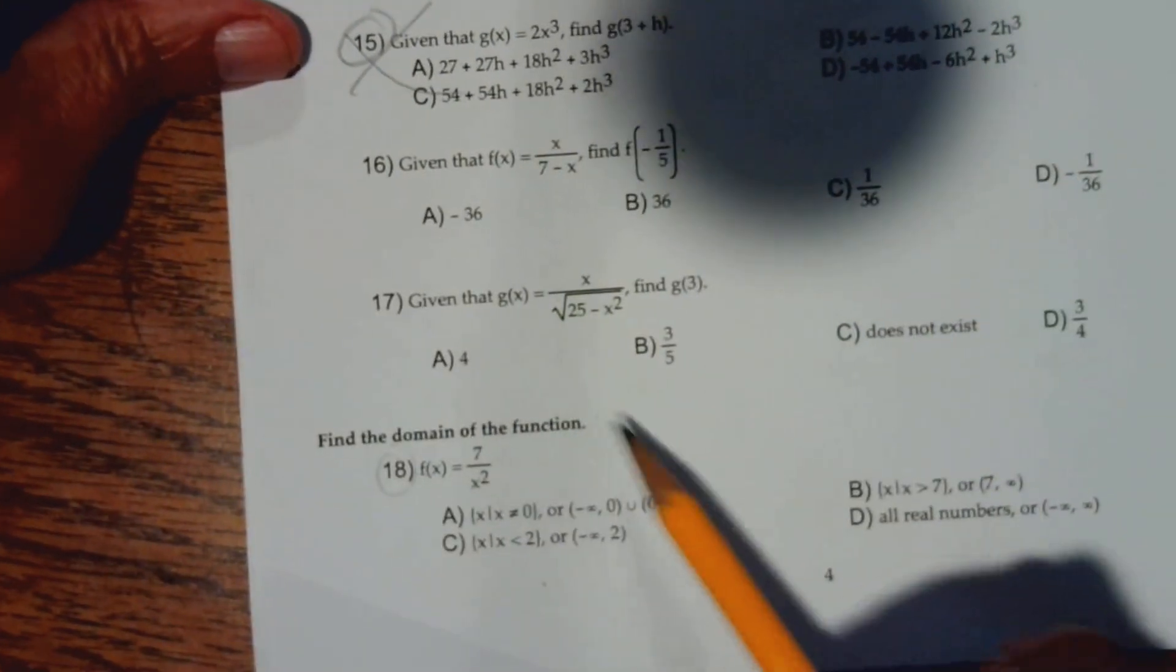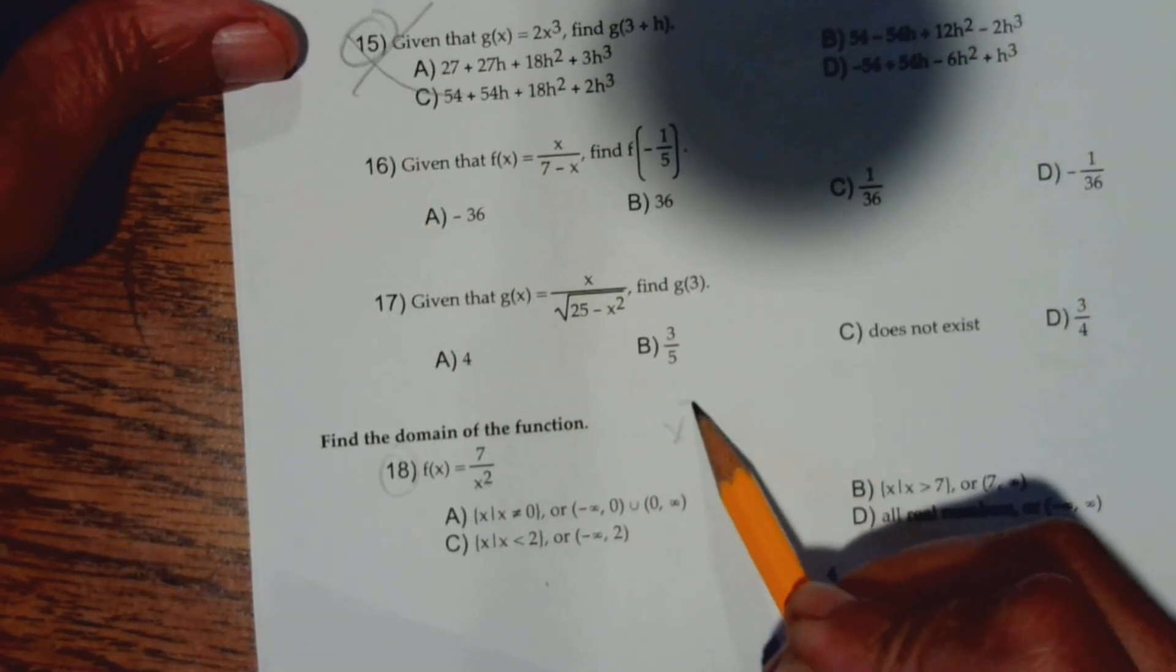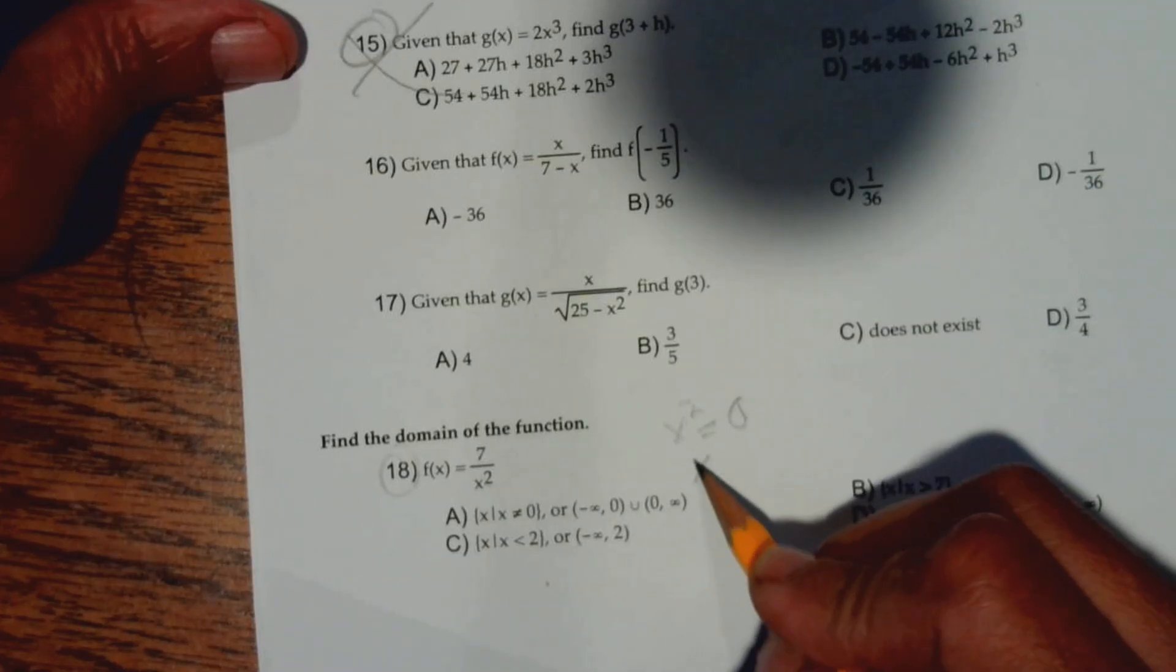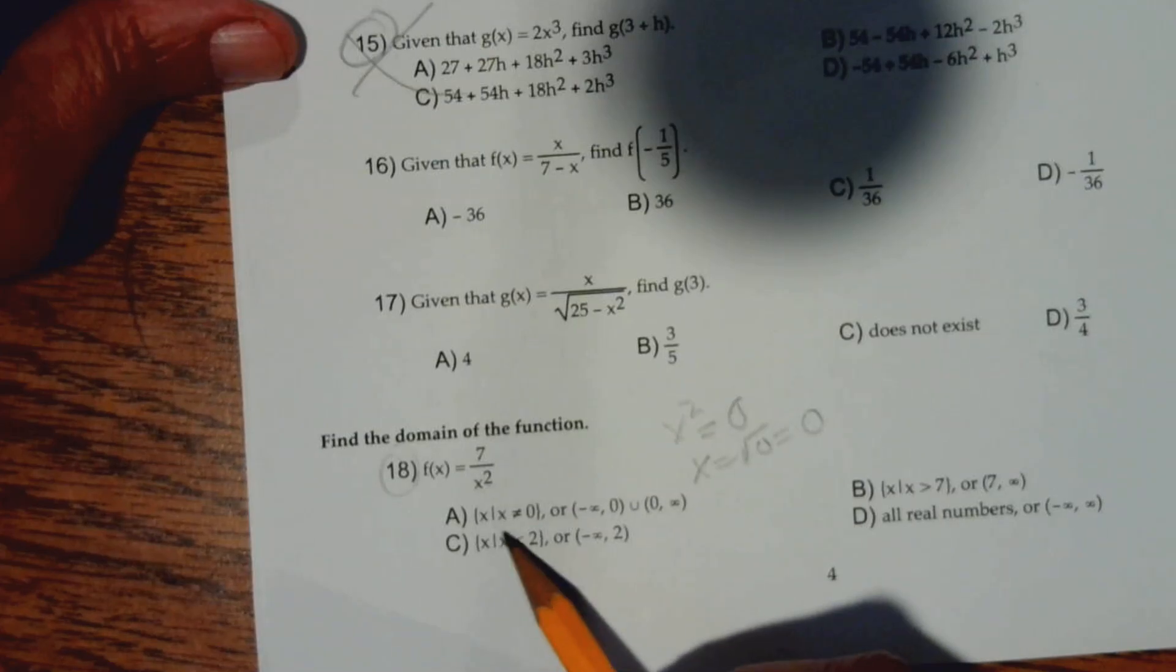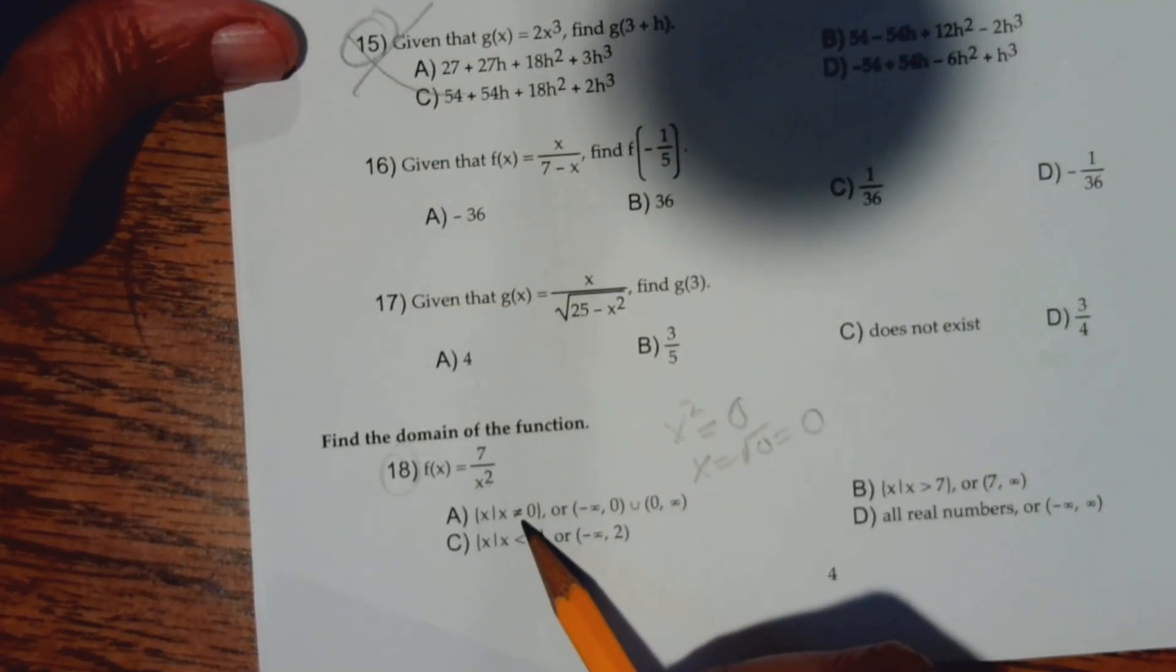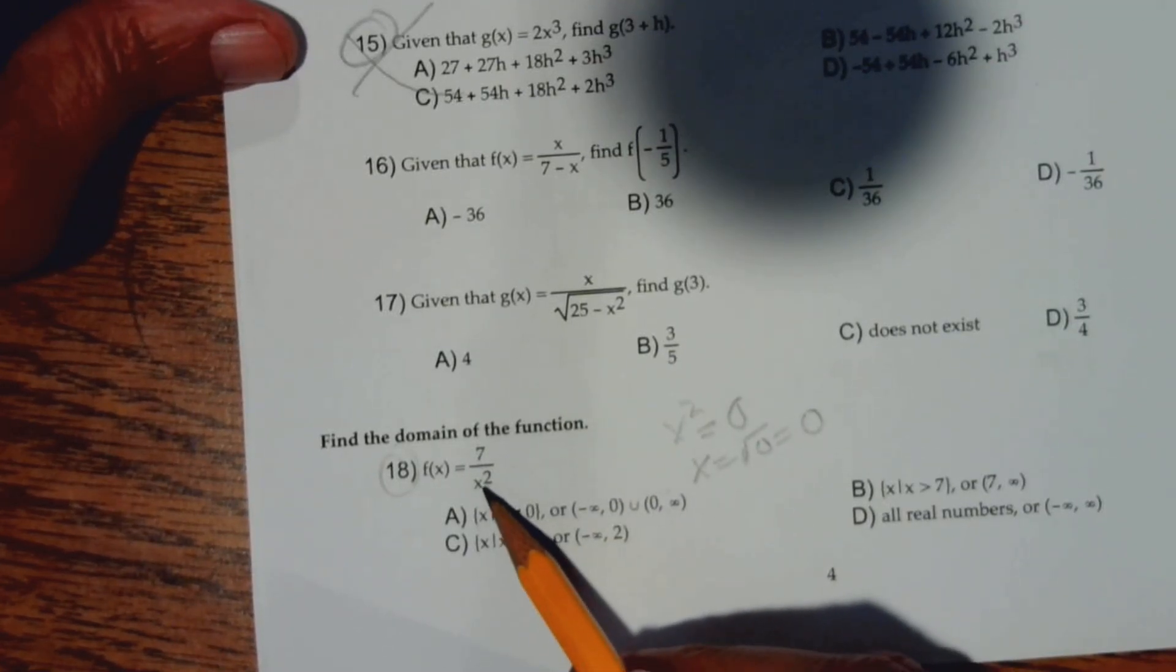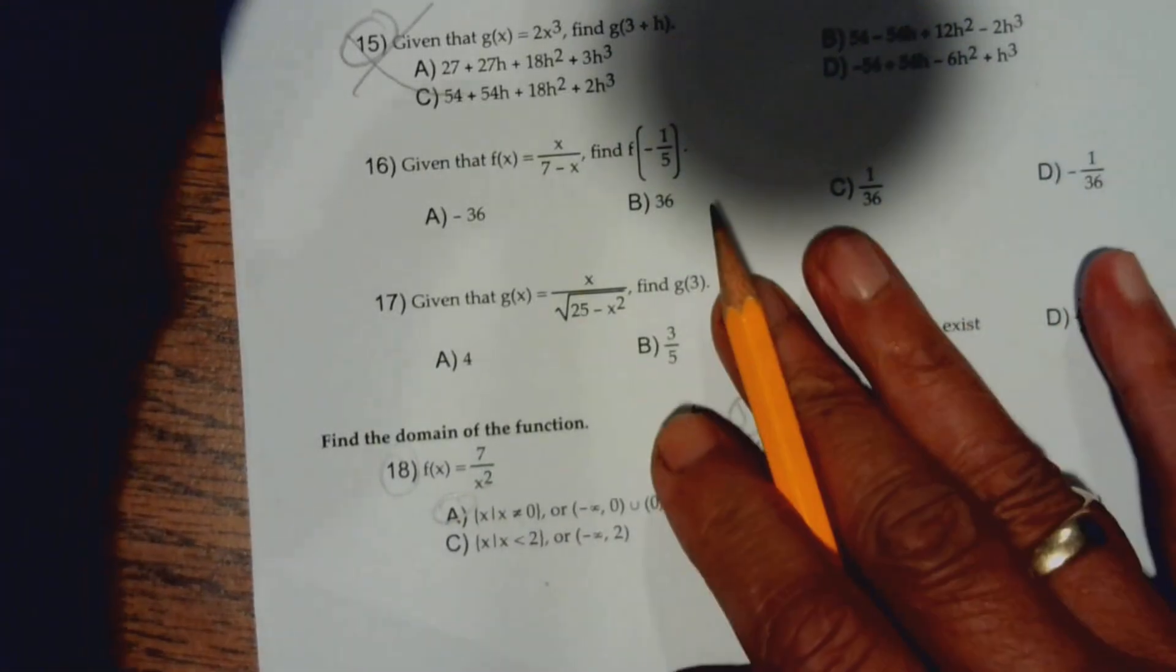Number 18, I did in class, I believe. You can't divide by 0, so you don't want to use any value for x that causes this denominator to be 0. When does x² equal 0? Well, the square root of x² is x, and the square root of 0 is 0, so x cannot be 0. That's letter A. If you square 0, you get 0, and 7 divided by 0 is undefined. Can't use 0.